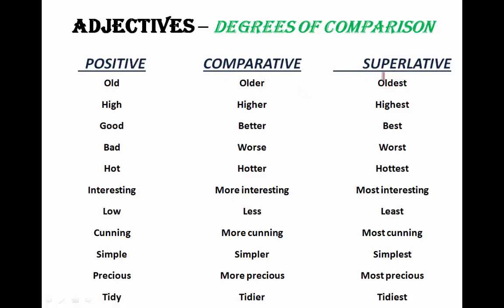The third one is superlative degree — 'oldest.' For example: who is the oldest man in your family? Here I am comparing more than two persons of the same class. When we compare more than two people, we use superlative degree. When there is no comparison, we use positive degree.